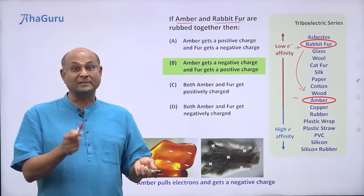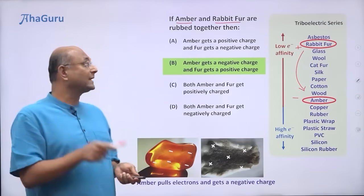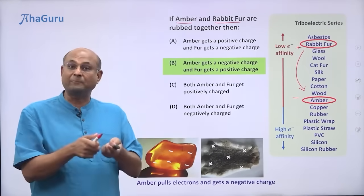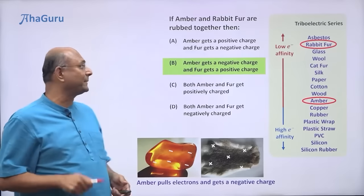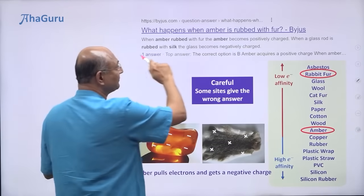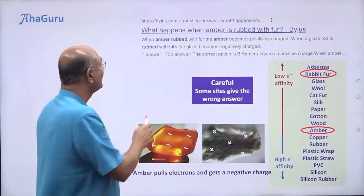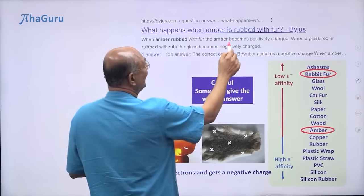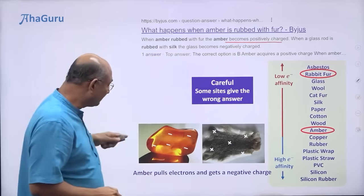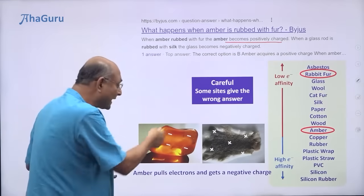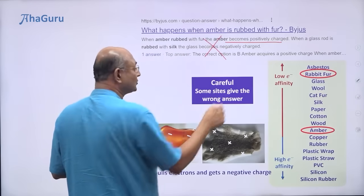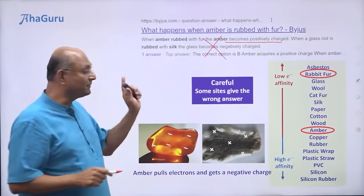Whenever you go to the internet to look for answers, you have to be careful. For example, if you search 'amber and rabbit fur rubbed together, what happens?', one of the first answers that comes up says amber becomes positively charged. But we know that amber pulls electrons, so amber is going to get negatively charged. Clearly that answer is wrong — you have to be very careful.